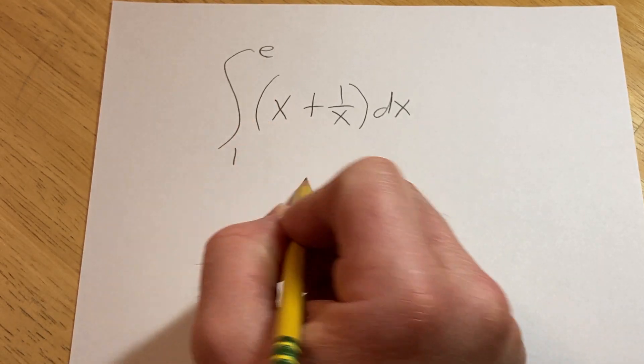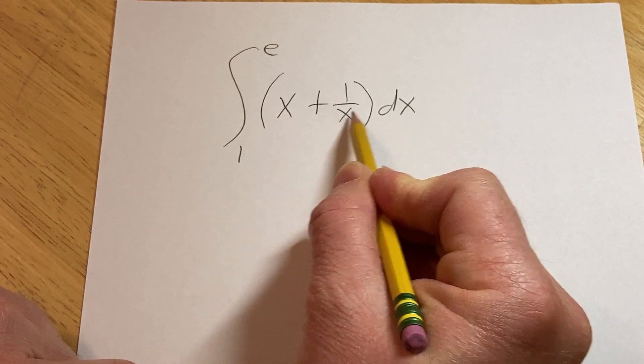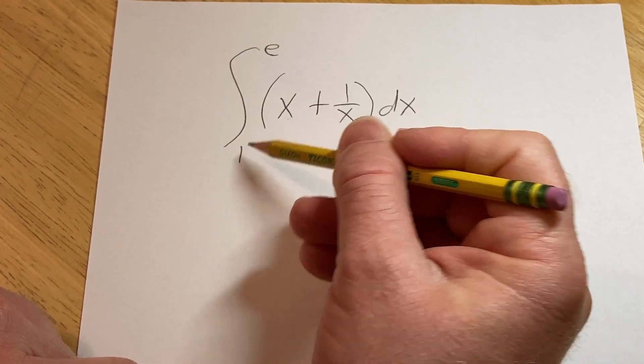Hi, in this problem we're going to evaluate this definite integral. We have x plus 1 over x with respect to x and we're going from 1 to e.